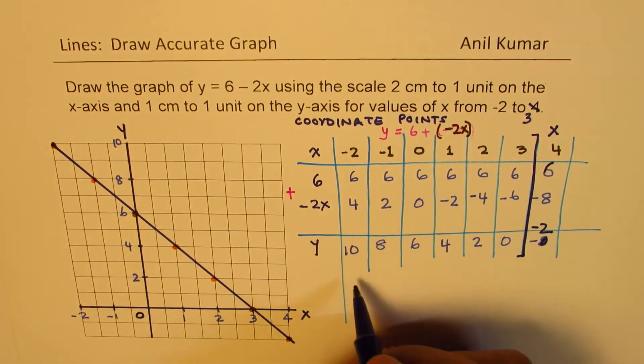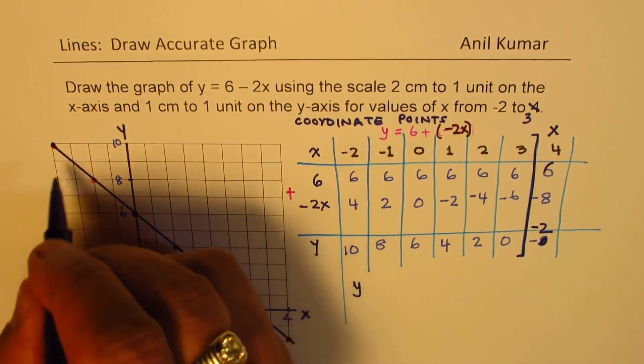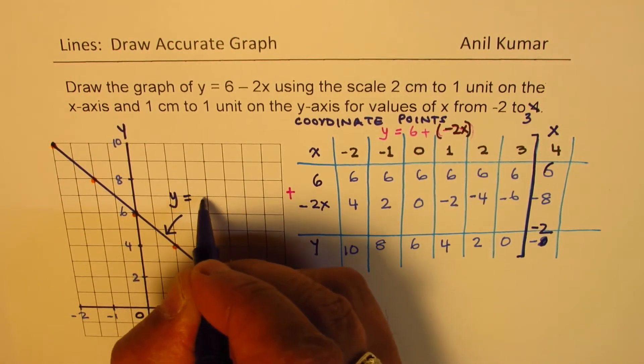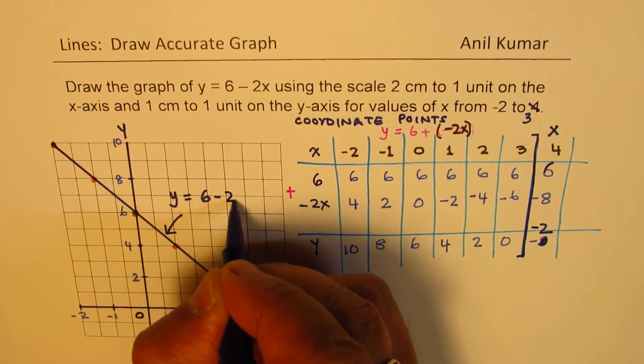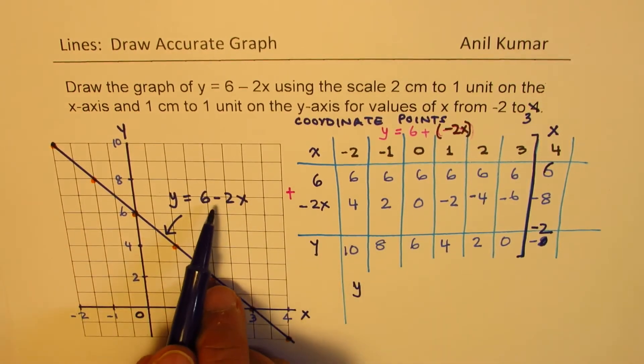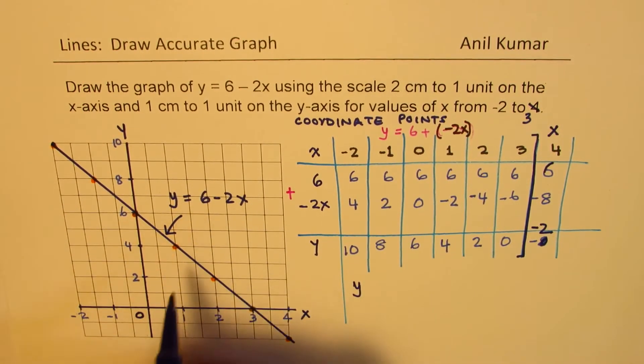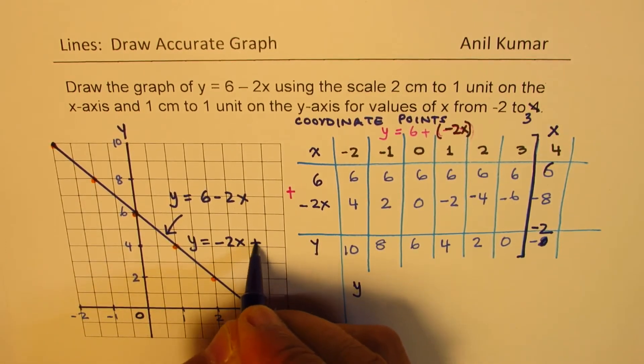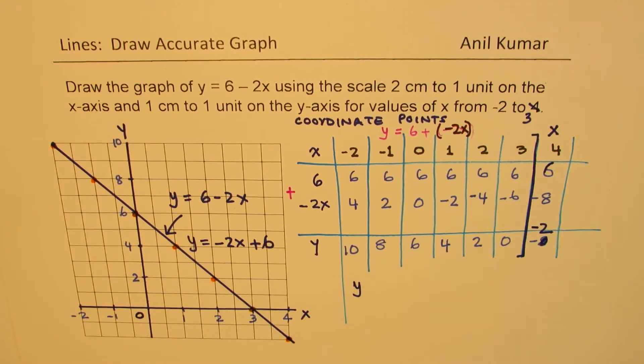And the equation here is y. Let's write down the equation right here. So we can write down the equation for the graph, which is y equals to 6 minus 2x. Normally, we write minus 2x.